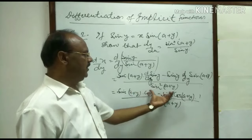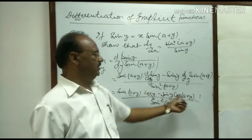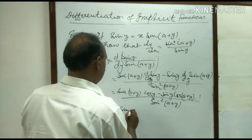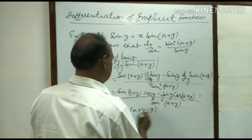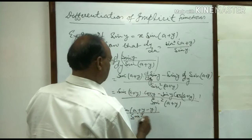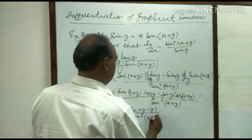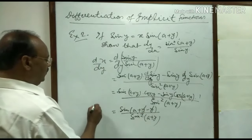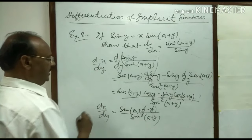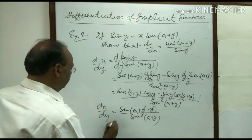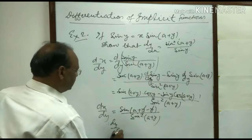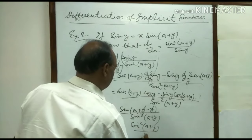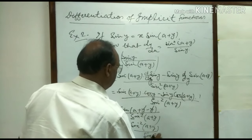The numerator is in the form of sin A cos B minus cos A sin B, which equals sin(A minus B). So this is equal to sin(a plus y minus y) upon sin squared(a plus y), and a plus y minus y simplifies to sin a. Therefore derivative of y with respect to x is sin squared(a plus y) upon sin a. This is the answer.